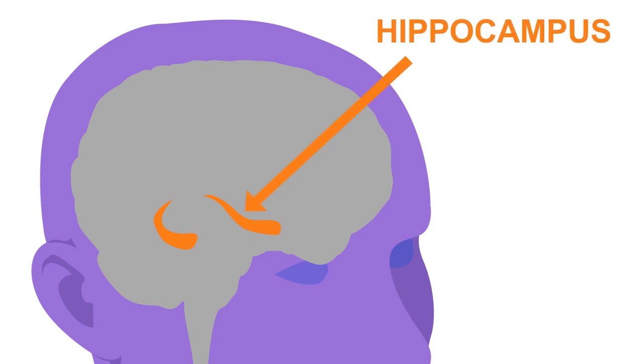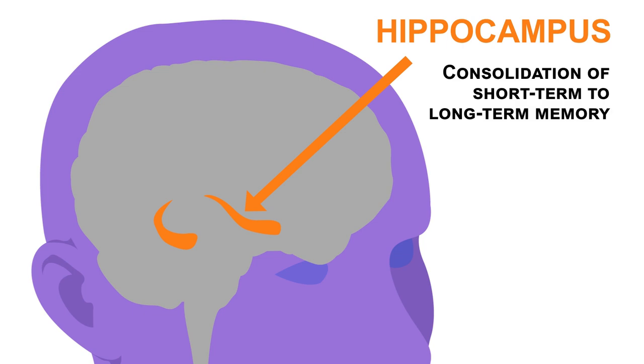Your hippocampi are a pair of structures, one in each cerebral hemisphere, which are important in the consolidation of short-term memory to long-term memory. They are part of the limbic system.